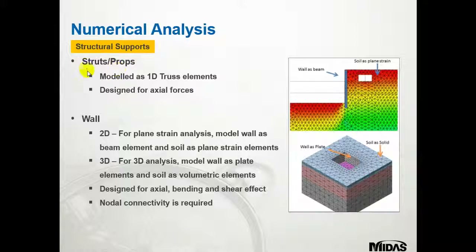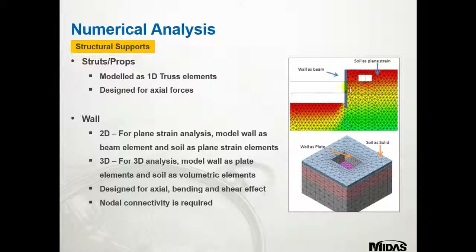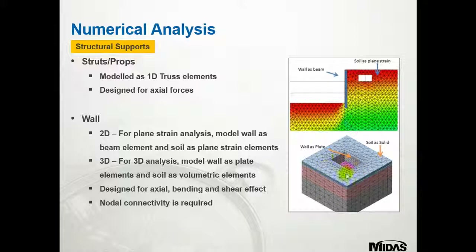Struts and props are modelled as 1D truss elements, designed for the force acting on the element from the opposite side. For walls in 2D plane strain analysis, the wall is modelled as a beam with soil as a plane strain element. For 3D analysis, walls are modelled as plates and soil as a volumetric element around the outside. This is designed for bending and shear force effects, with nodal connectivity required - the nodes become more condensed as they move towards the excavation.